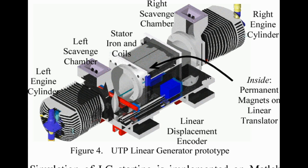Engine head: it is the head of the engine to which the spark plug or fuel injector is attached, and it is mounted over the combustion chamber just like in the IC engine. Spark plug or fuel injector: the spark plug is used to ignite the air-fuel mixture, and the fuel injector injects diesel fuel during the compression of air, which results in combustion.